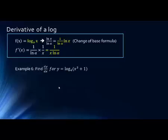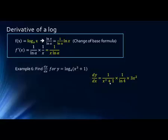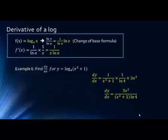Here we have the same setup using log base 4 with a chain rule. We take the derivative of the outer log function: 1 over the argument, which is 1 over (x³ + 1), times 1 over the natural log of the base — so 1 over ln(4) — times the derivative of what's inside, which is 3x squared. So the derivative equals 3x² over (x³ + 1)·ln(4).